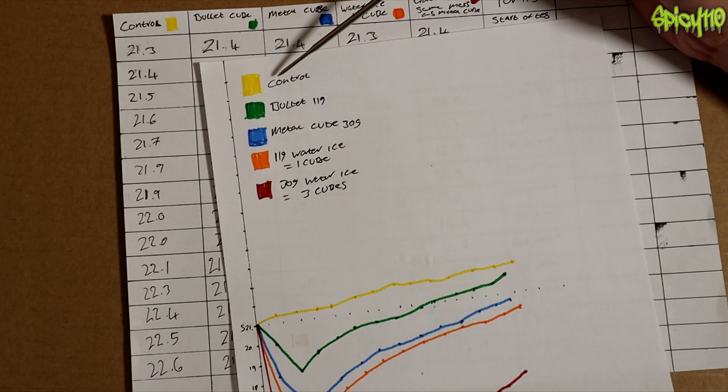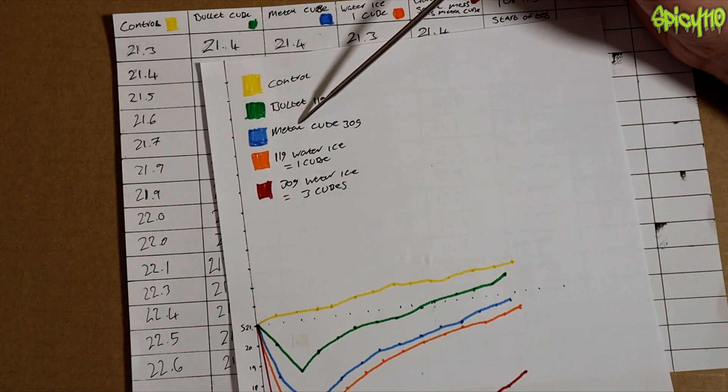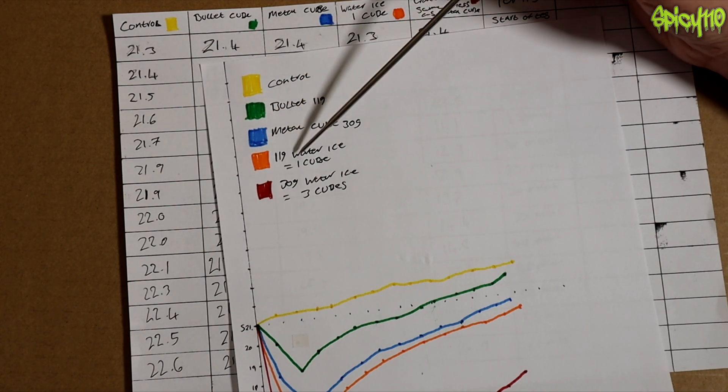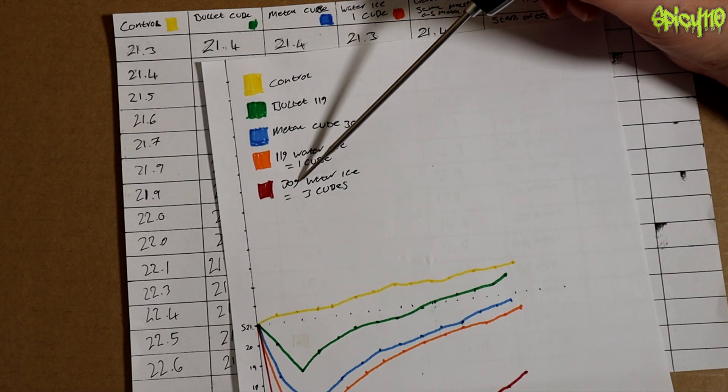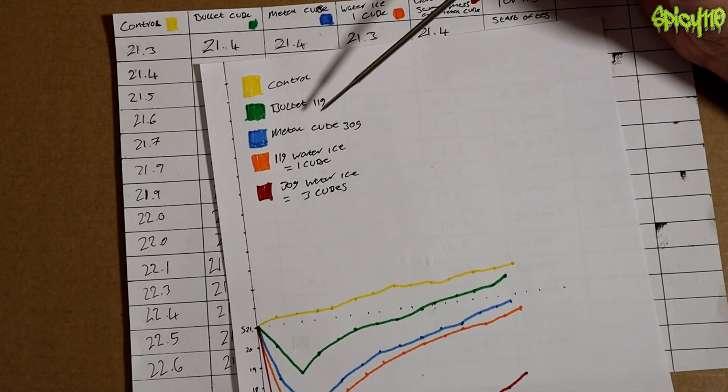So for reference, yellow is the control, green is the bullet, the metal cube is blue, the orange is the single ice cube at about 11 grams, and the red is the three ice cubes at 30 grams, which means it's the same weight as the metal ice cube.